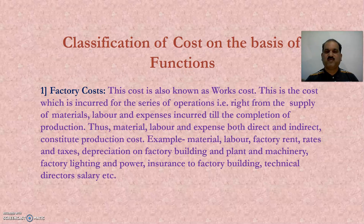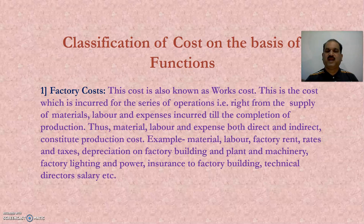Factory cost is also known as works cost. This is the cost incurred for the series of operations right from the supply of material, labour and expenses till the completion of production. Thus, material, labour and expenses — both direct and indirect — constitute product cost. Examples include: material, labour, factory rent, rates and taxes, depreciation on factory building and plant and machinery, factory lighting and power, insurance to factory building, and technical director salary.